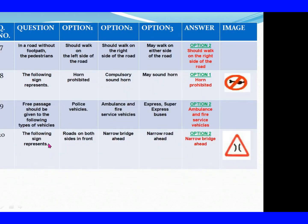Question 17: On roads without footpath, the pedestrians. Option 1: Should walk on the left side of the road. Option 2: Should walk on the right side of the road. Option 3: May walk on either side of the road. The right answer is Option 2: Should walk on the right side of the road. Question 18: The following sign represents. Option 1: Horn prohibited. Option 2: Compulsory sound horn. Option 3: May sound horn. The right answer is Option 1: Horn prohibited.